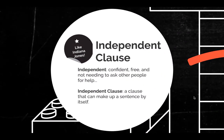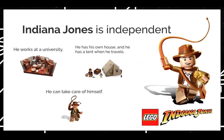Let's start with some review about what an independent clause is. The word independent means confident, free, and not needing to ask other people for help. An independent clause is a clause that does not need help — it can make up a sentence by itself. Remember we talked about Indiana Jones: he is independent. He works at a university, he has his own house, and he uses a tent when he travels.